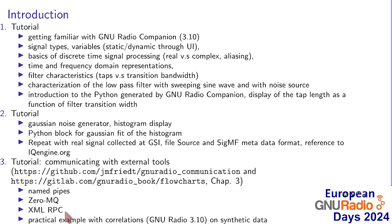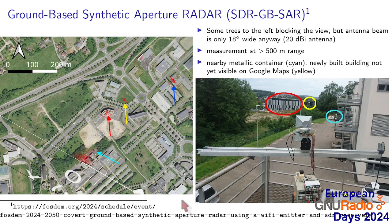This will also allow us to address how to change flowchart parameters using RPC. We're going to conclude with correlation, because you will not find a correlator block in GNURadio, and we'll see how we can actually use signal processing to perform the correlation. The context in which we're using 0MQ is the example of a ground synthetic aperture radar.